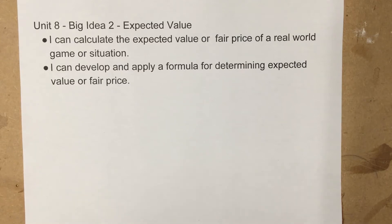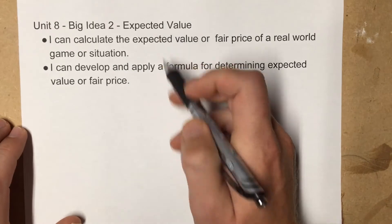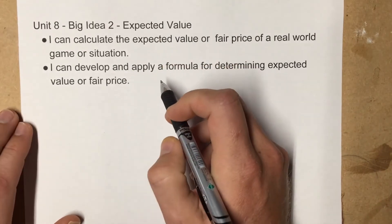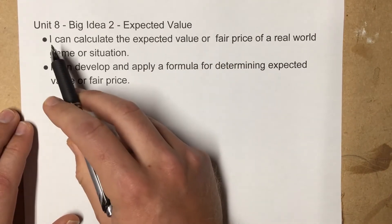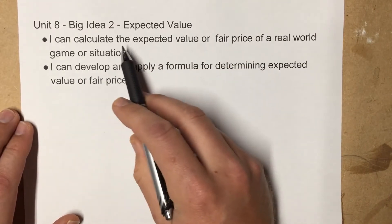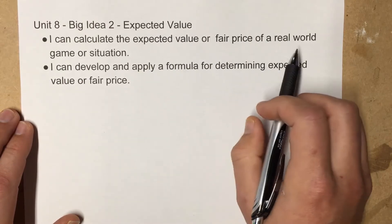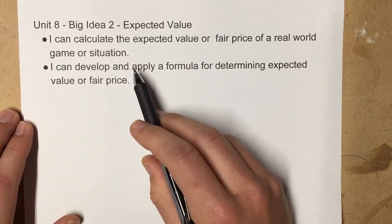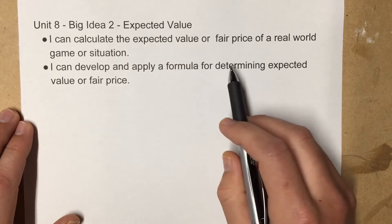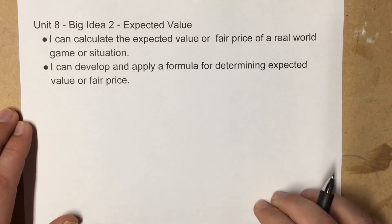Hello everybody. Today we're going to be taking a look at unit 8, big idea 2: working with expected value. The 'I can' statements that go along with this big idea are: I can calculate the expected value or fair price of a real-world game or situation, and I can develop and apply a formula for determining expected value or fair price.